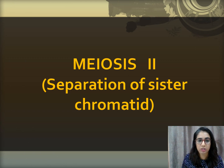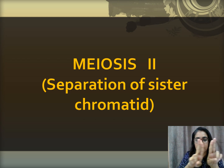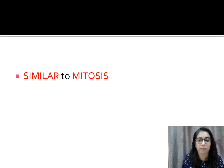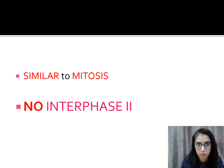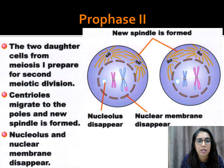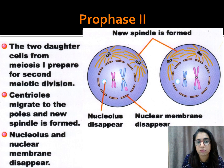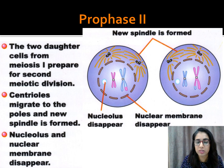Meiosis 2 is the separation of the sister chromatids. In meiosis 1 we had the two homologous chromosomes separating; now the sister chromatids will separate. Meiosis 2 is similar to mitosis. There is no interphase 2 — only the original interphase at the beginning. After telophase 1 cytokinesis, the cells go straight into prophase 2. In prophase 2, the two daughter cells undergo the second meiotic division: centrosomes migrate to the poles, new spindles form, and the nucleolus and nuclear membrane disappear.